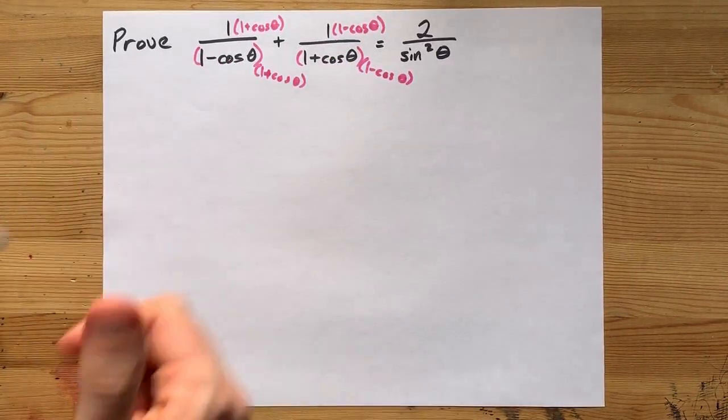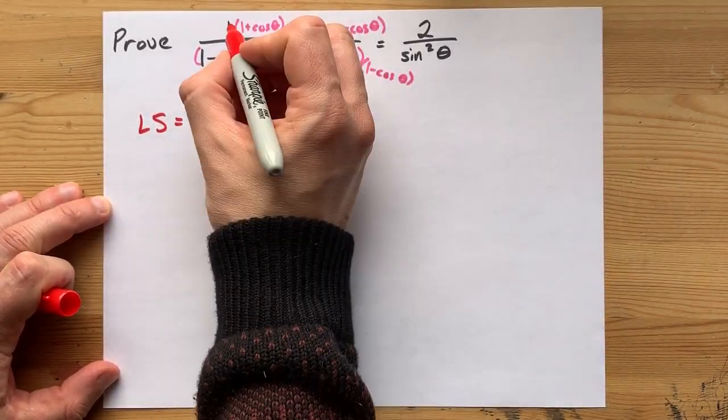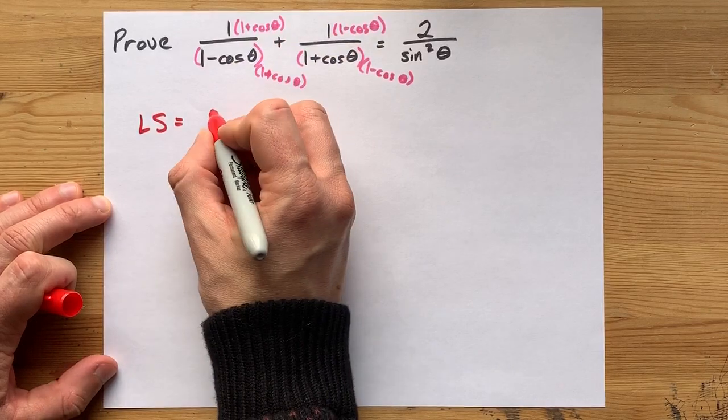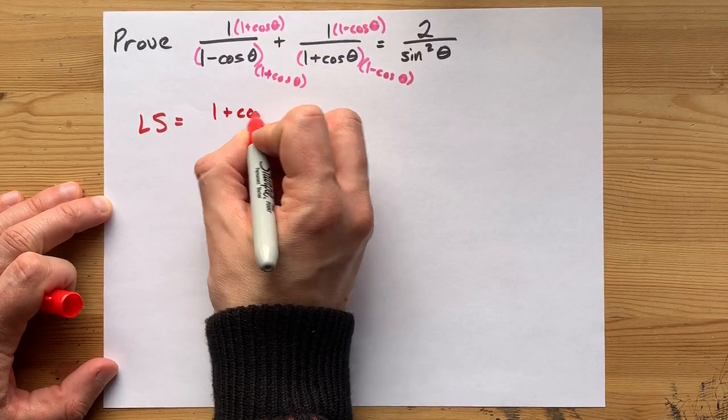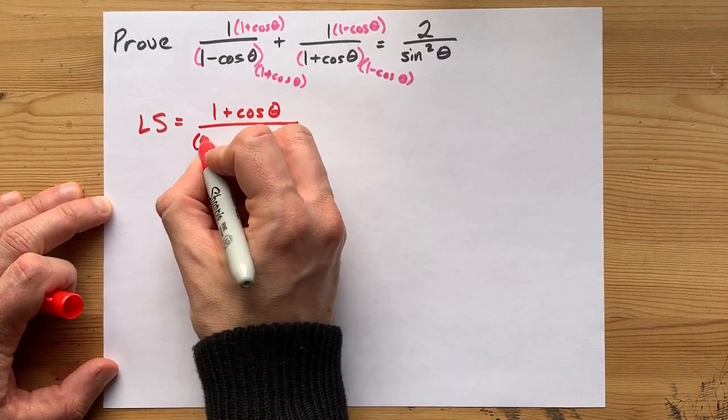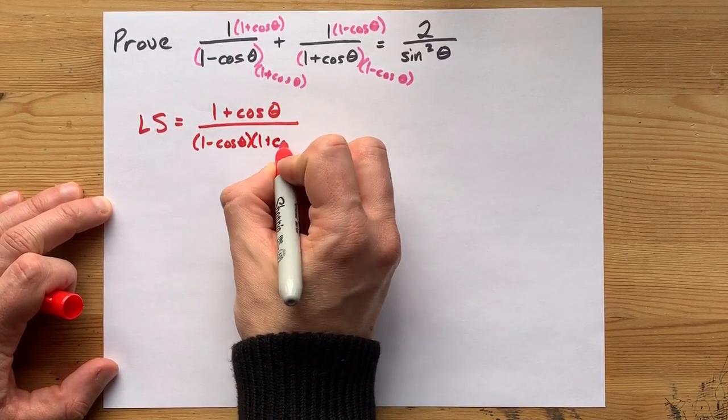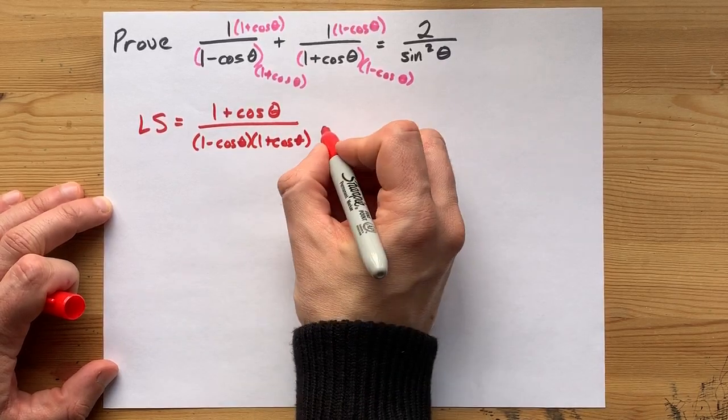The whole reason we might do that is so that the bottoms match. So, 1 times 1 plus cos theta is 1 plus cos theta, because anything times 1 is 1. The bottom is 1 minus cos times 1 plus cos. Nice. Okay, not too bad.